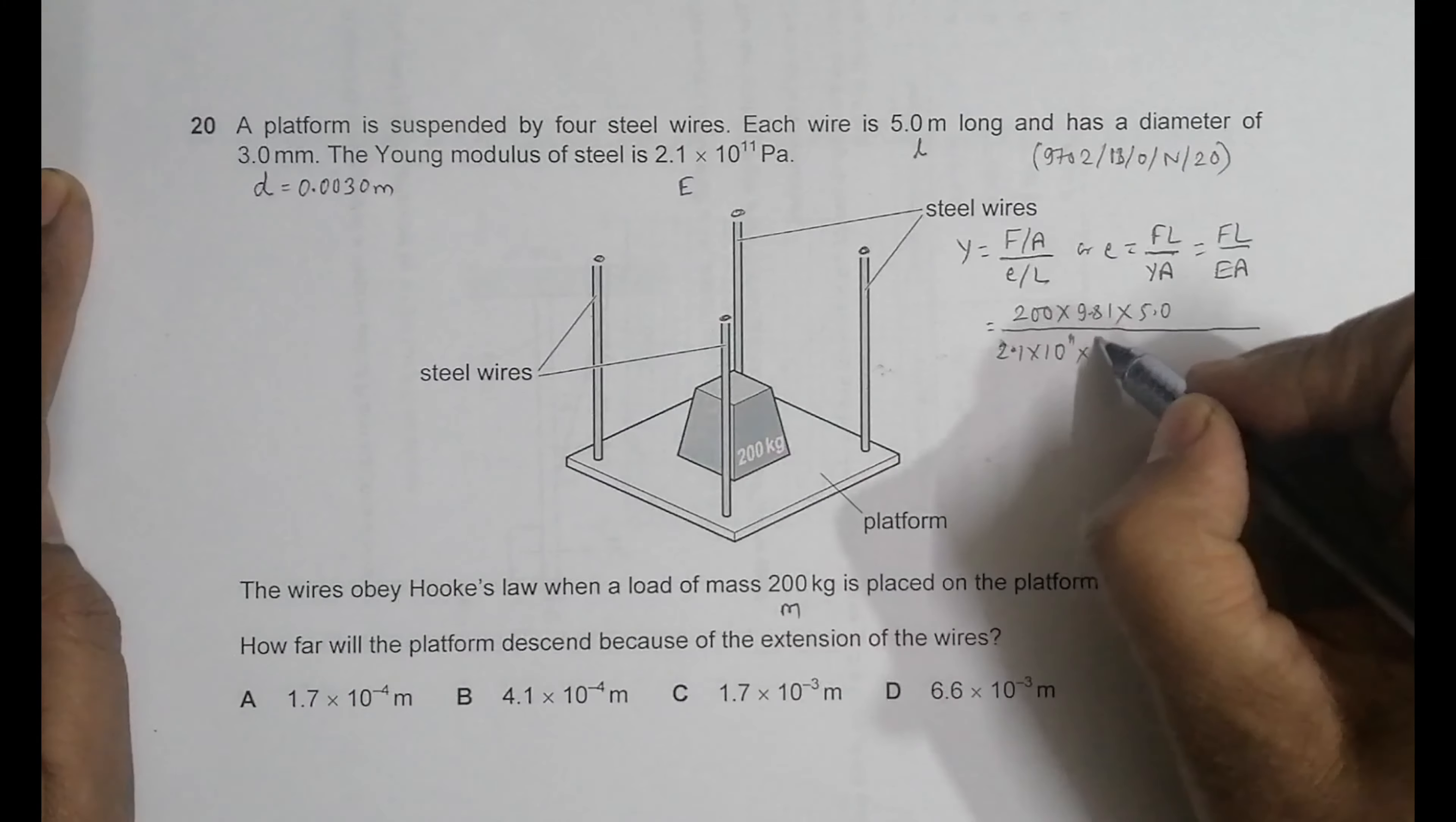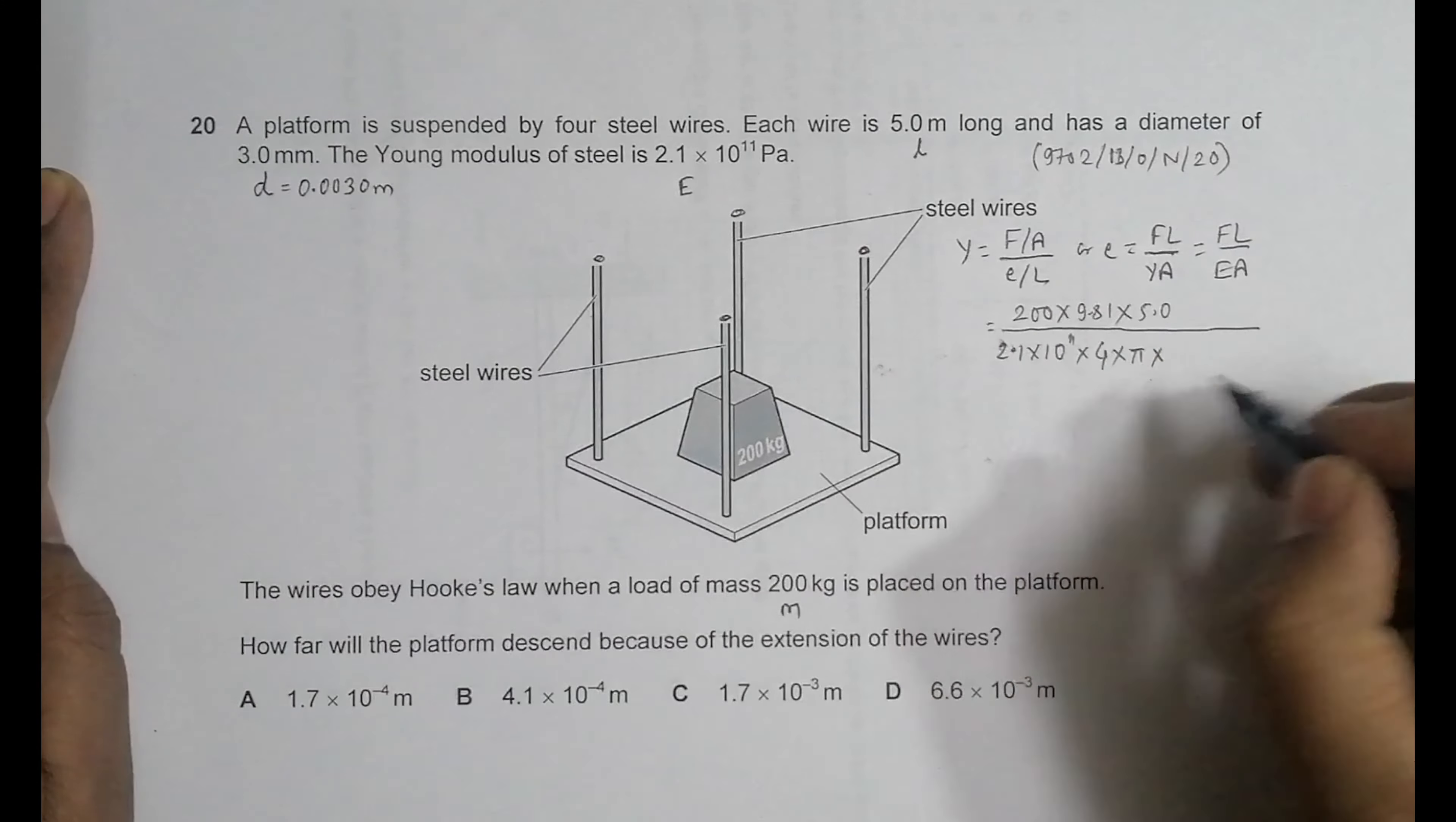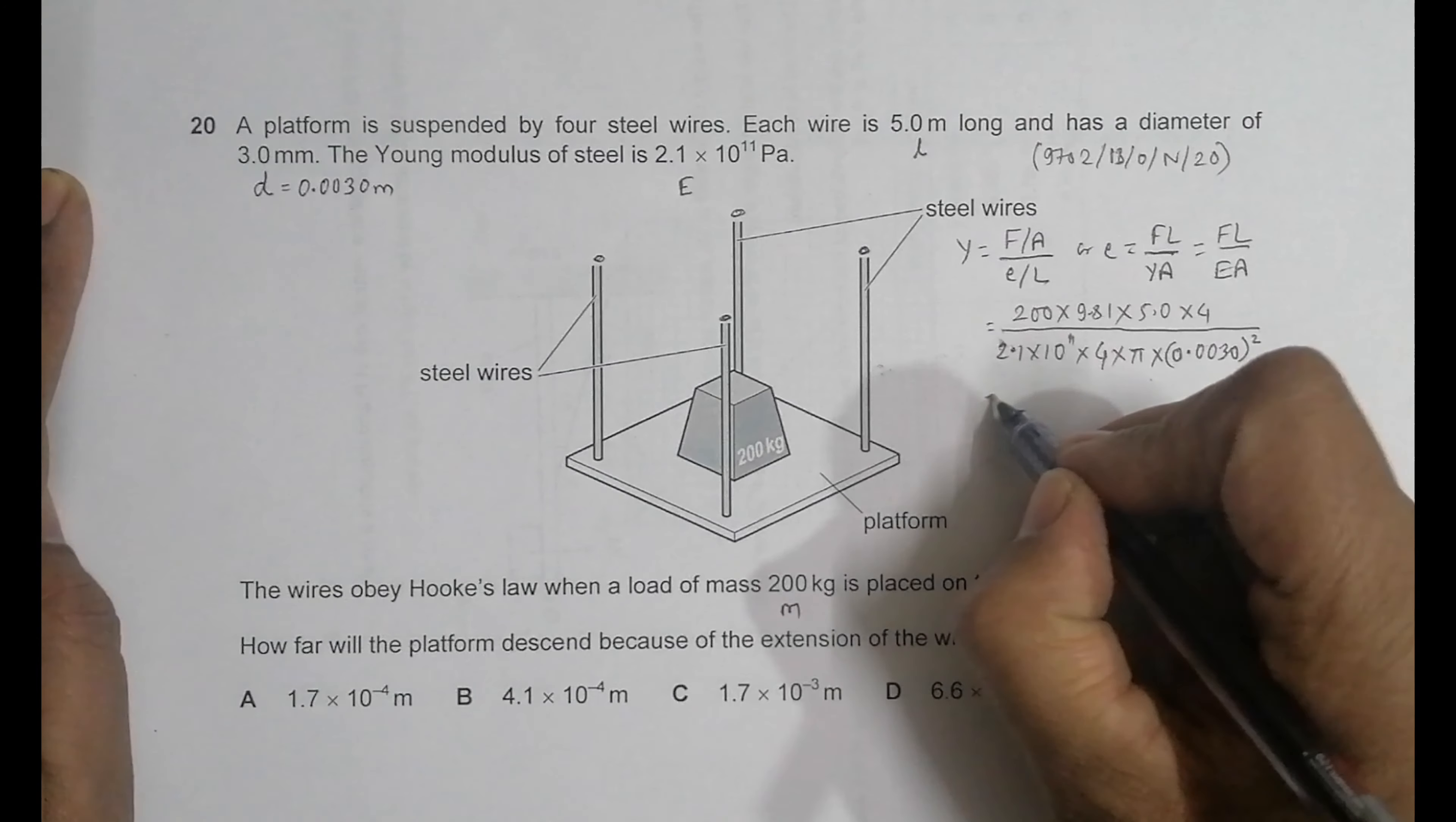The area of one wire equals πD²/4, so the total is 4 times πD²/4, which equals π times 0.0030 squared.